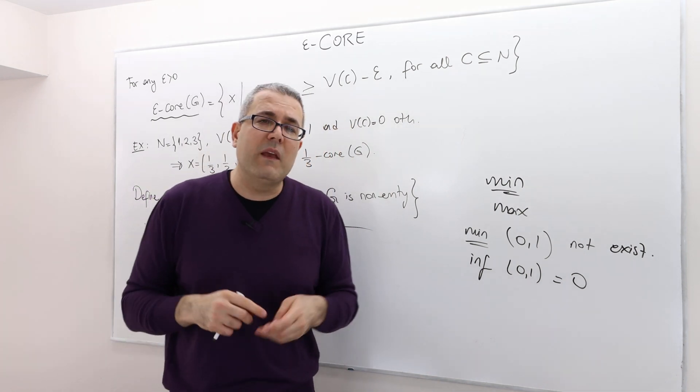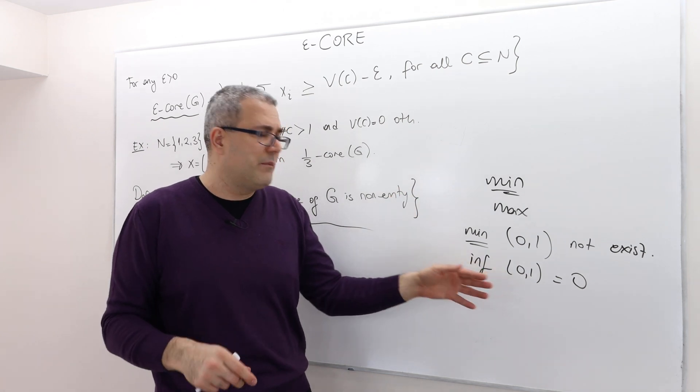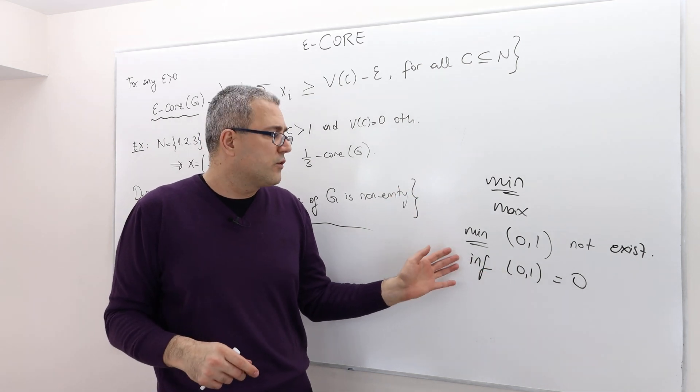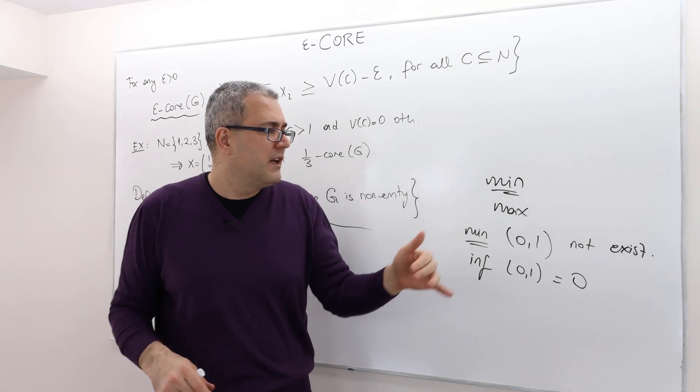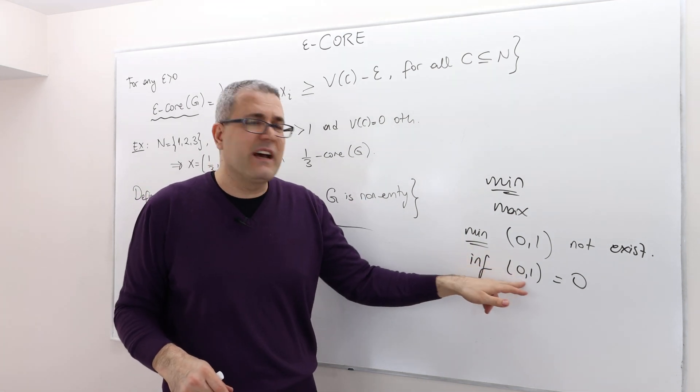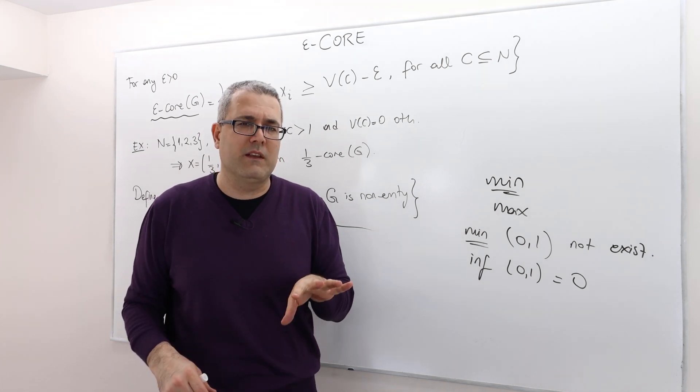Because the infimum doesn't have to be in this set. It can be outside of this set. But it's sort of the maximum number, the highest number that is less than any other number in this set, 0, 1. This is what infimum is.